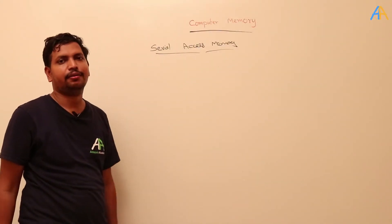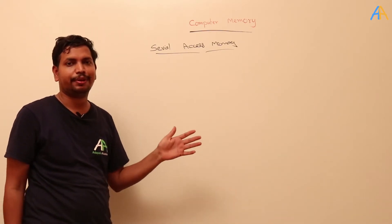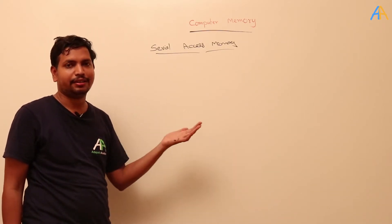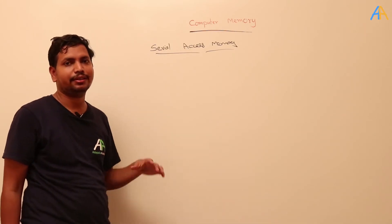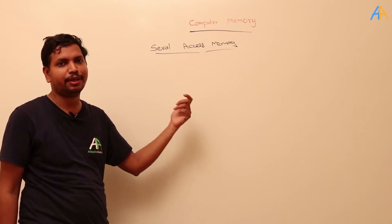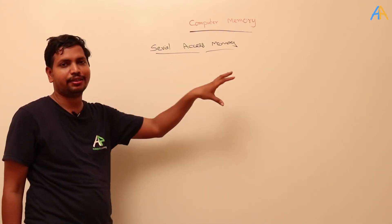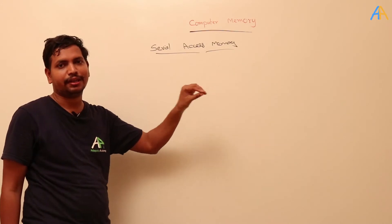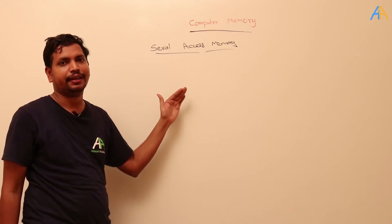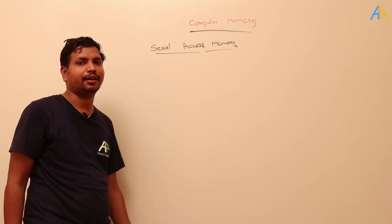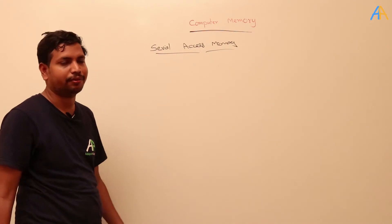Serial Access Memory. Earlier we were studying random access memory — once the address is given, it can read any data from any address. Serial access memory is different. In random access memory, if an address is given for any particular location, we can access directly to that location. But in serial access memory, we cannot access directly to that particular address; we have to access one after another.